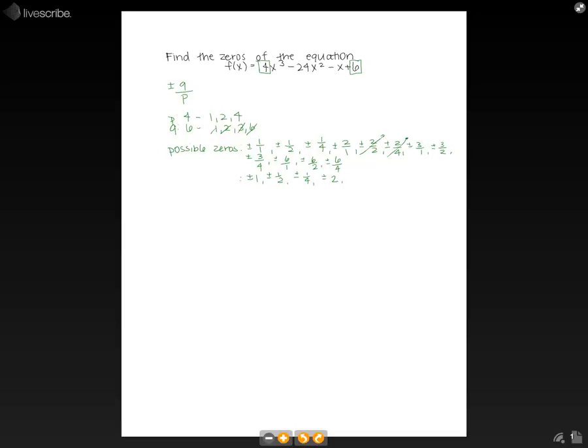Then we have ±3/1, which will be ±3. We have ±3/2, ±3/4, ±6. And then we can see ±6/2 is just 3, and ±6/4 is ±3/2, which is what we already have.